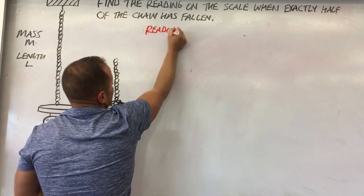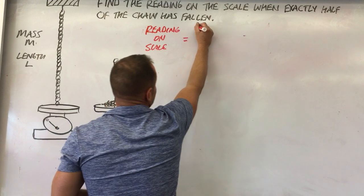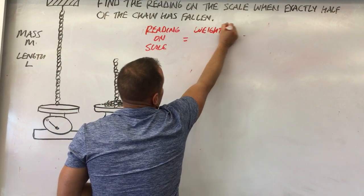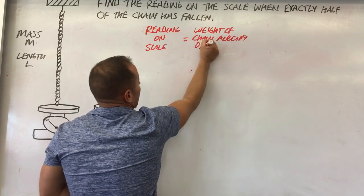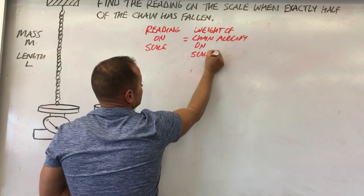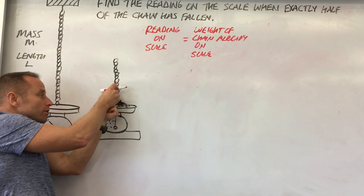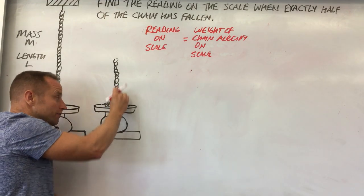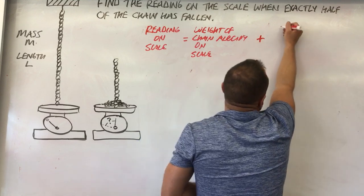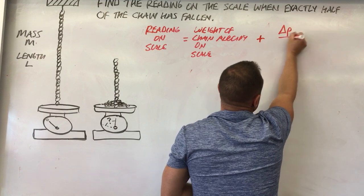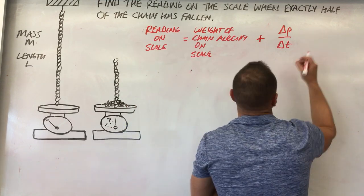The reading on the scale has a couple of factors. There's the weight of the chain that is already on the scale, and then we also have to account for the change in momentum — the scale has to push upward to change the momentum of that last little chunk of chain that's hitting right now. So the reading includes the static weight plus delta-P over delta-T for the piece currently hitting.